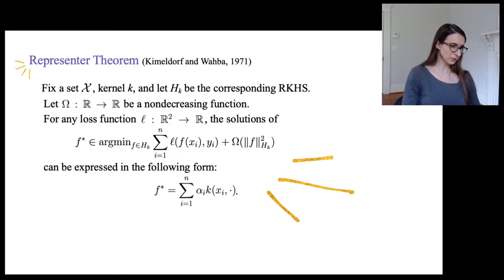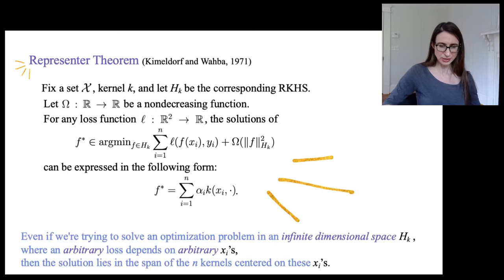And I mean, I find this really quite remarkable, because what it's saying is that even if we're trying to solve an optimization problem in an infinite dimensional space H_k, where an arbitrary loss function that you chose depends on arbitrary points in this space, then the solution lies just in the span of the n kernels centered on exactly those points. It's just completely mind-blowing if you think about it.